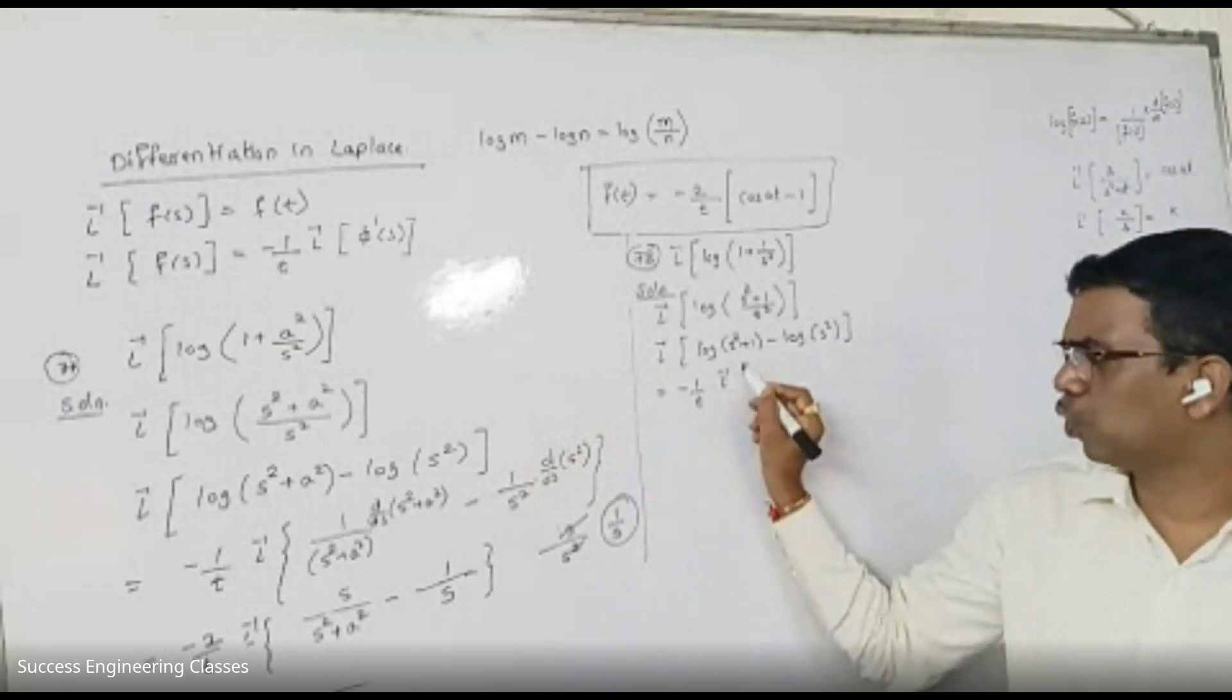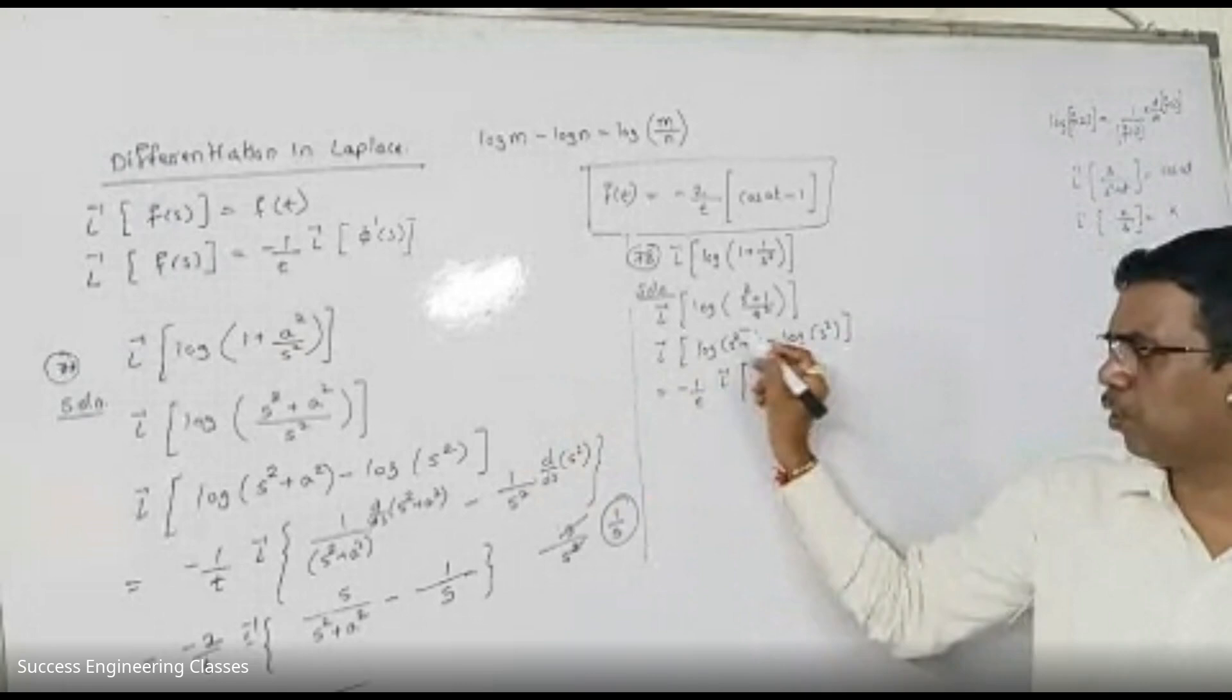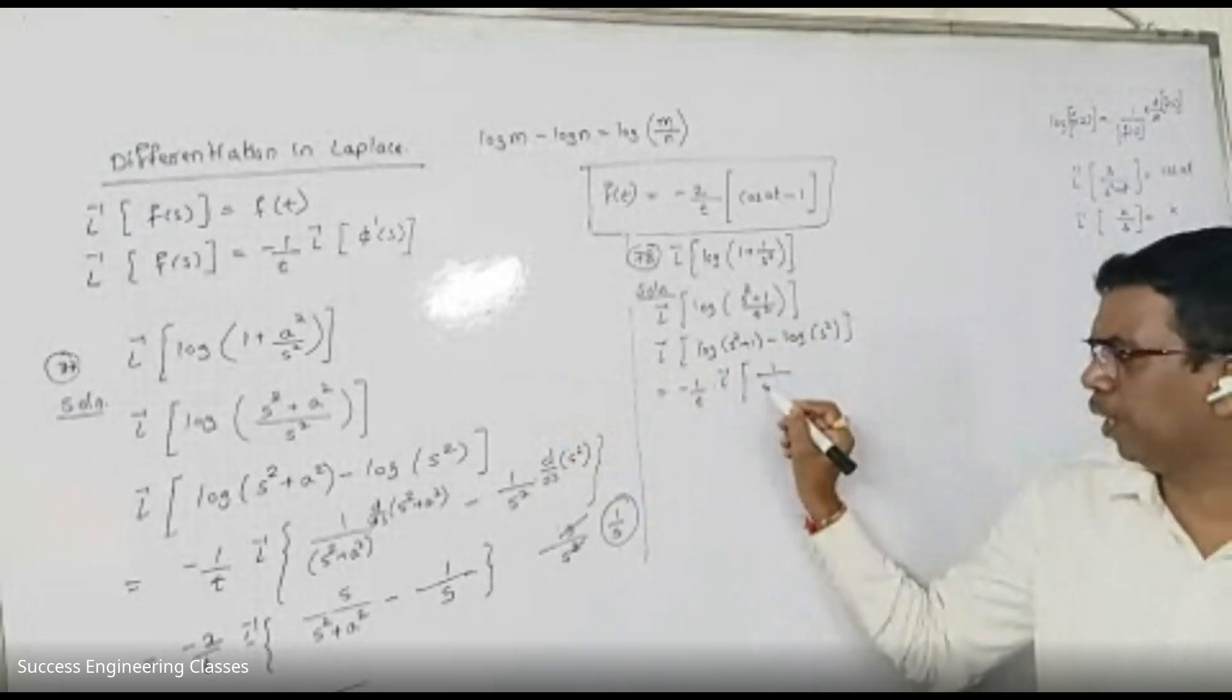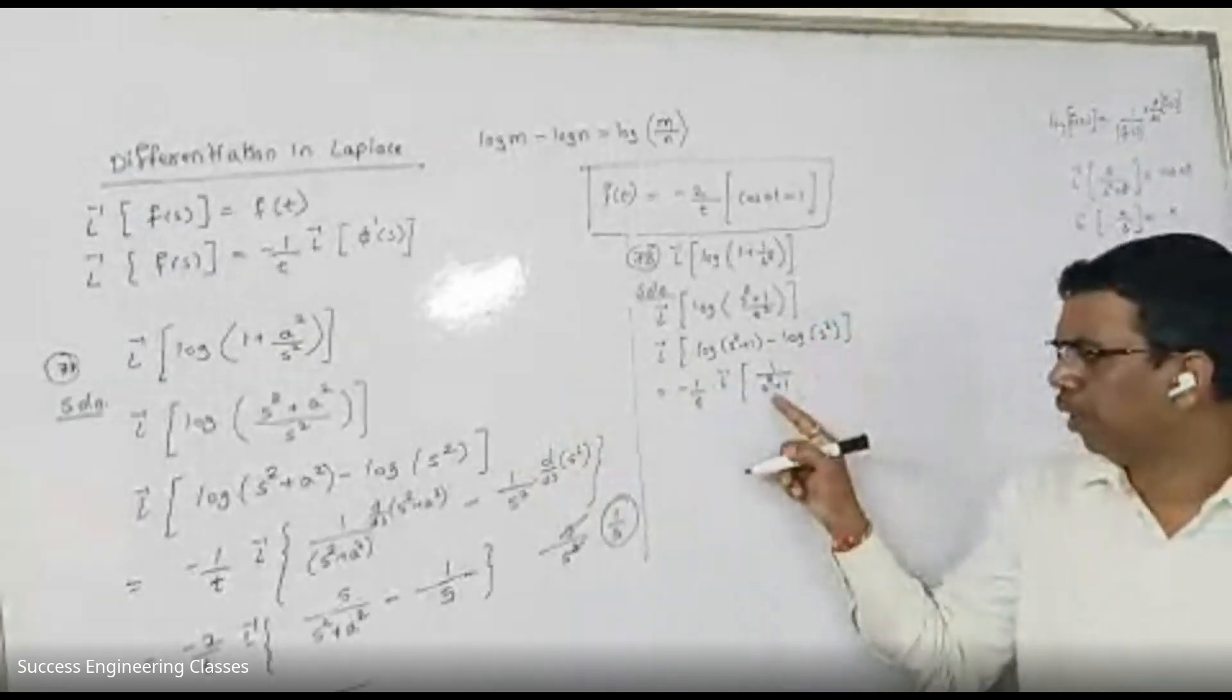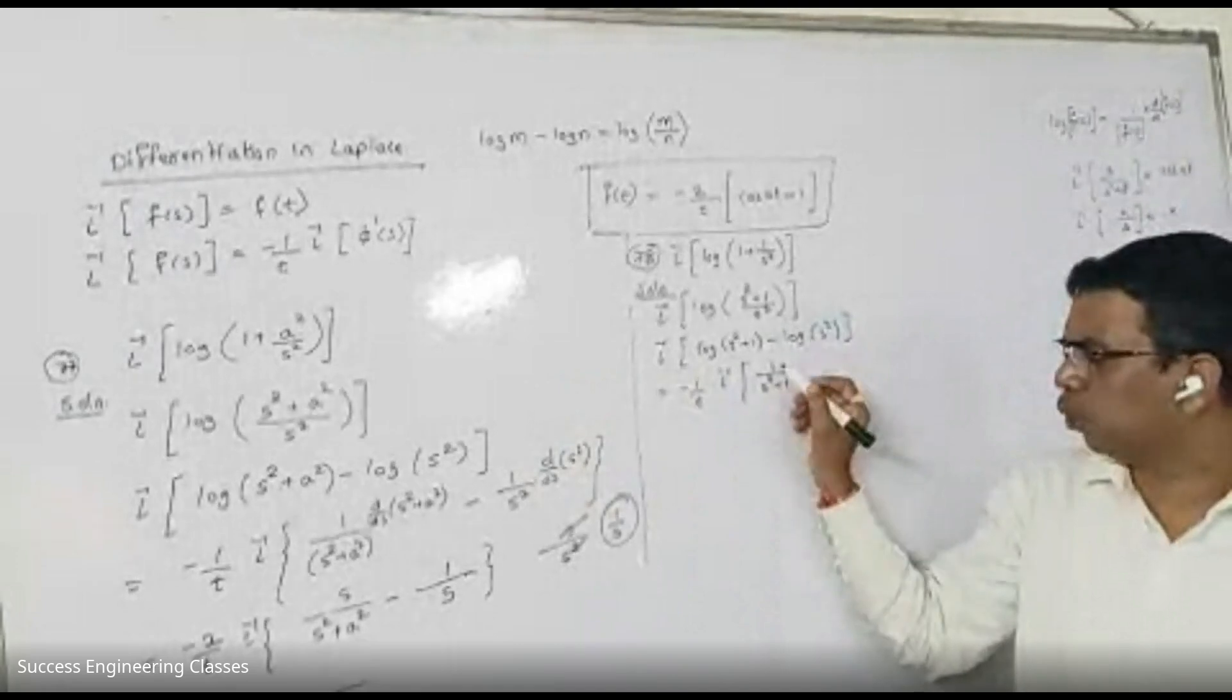So, Laplace inverse of f prime of A. So, log of A square plus 1 derivative. 1 upon A square plus 1 into derivative of A square plus 1.